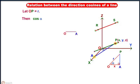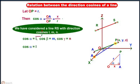Let OP equals to R. Then we can say cos α equals to OA by OP, that is x by R. Or we can say L equals to x by R.